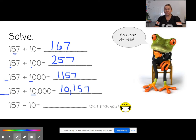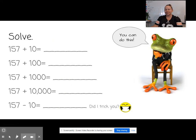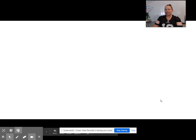Let's see if I can trick you on this one. Did I trick you? Did you see that it's a subtraction symbol? So if we take 10 away in the 10s place, we have 147. Did I trick you? Did I? No, probably not. All right. Let's go to the next slide.